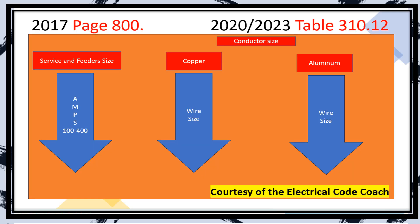Once we get to our table, we work from top to bottom, left to right, using those headings to navigate the table. On the left-hand side, we're going to find the size of the service and feeder listed in amps. It only goes to 400 because these rules only apply to services and feeders that feed the entire dwelling between one and 400 amps. On the next column, we see the copper side if we use copper, and then aluminum. So you size your service, come down to that table — say it's a 100 amp service and you want copper — you slide over and it tells you what size wire to use. It makes it super simple.